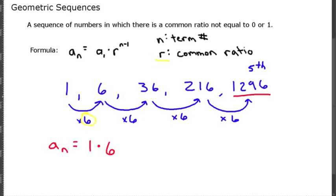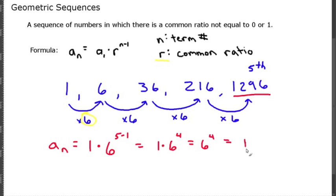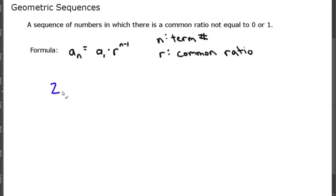Since n is the term number and we're looking for a sub 5, we do 6 to the 5 minus 1, which is 1 times 6 to the 4th, or just 6 to the 4th. When you type that on your calculator, 6 to the 4th gives you 1296.